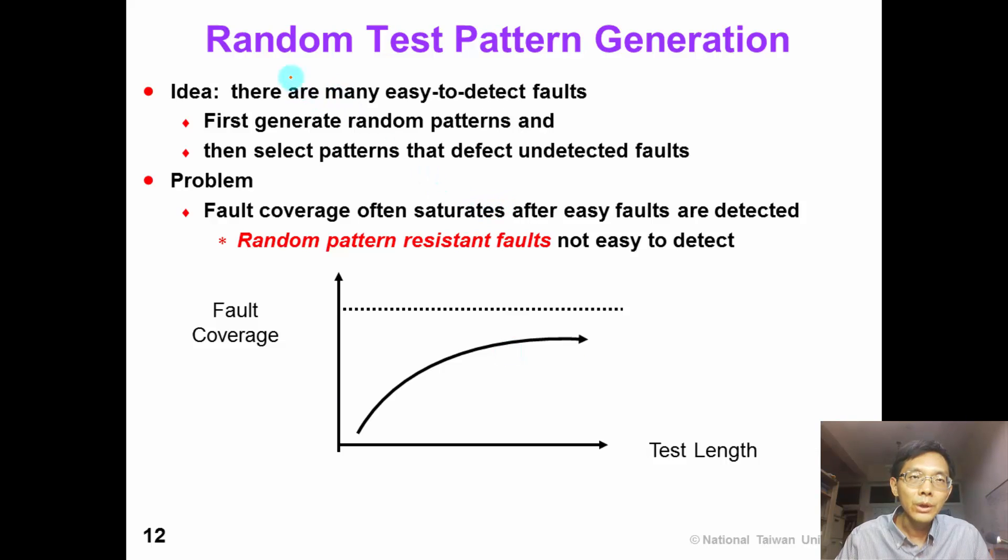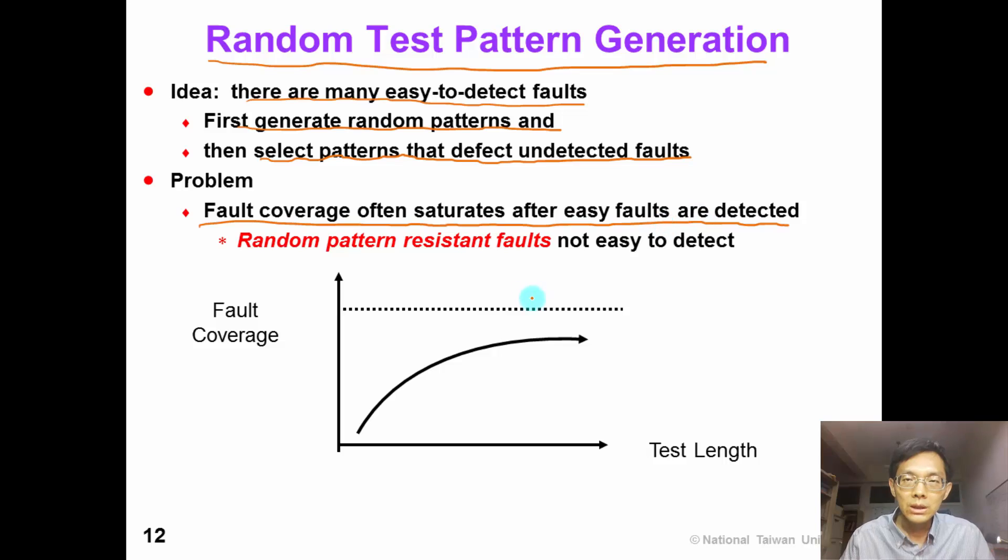The idea of random test pattern generation is because there are many easy-to-detect faults at the beginning, so we generate random patterns and select those patterns that detect undetected faults. The problem with random test pattern generation, of course, is that fault coverage can saturate after those easy faults have been detected.